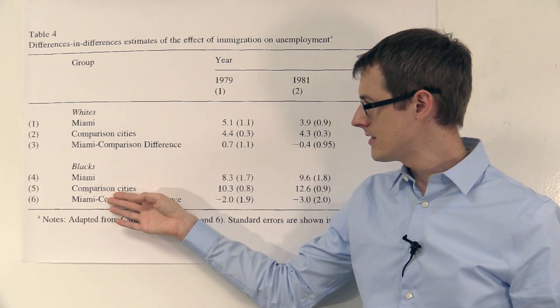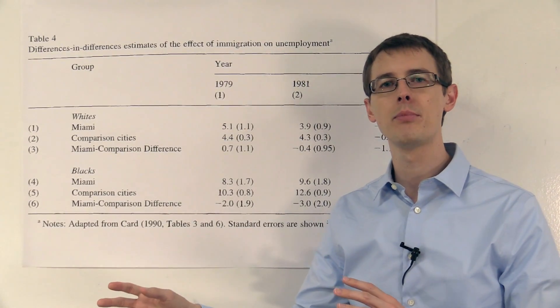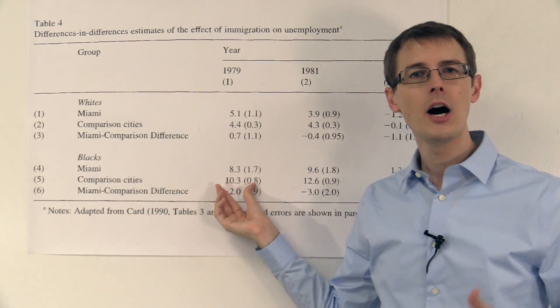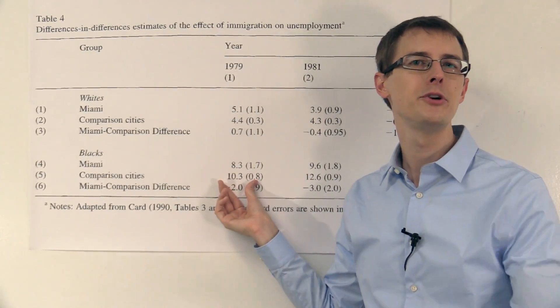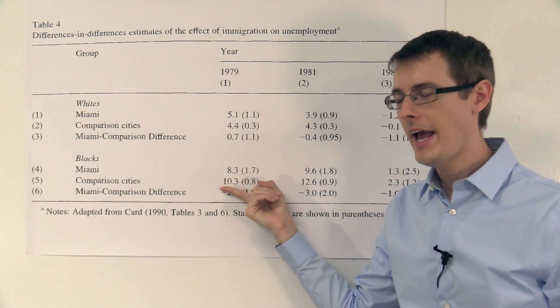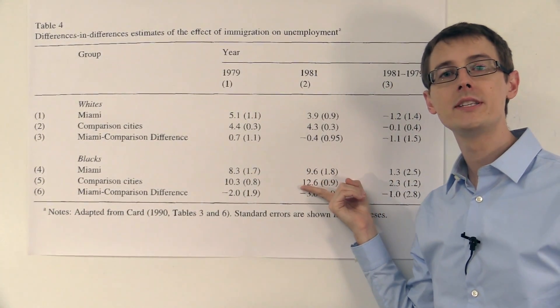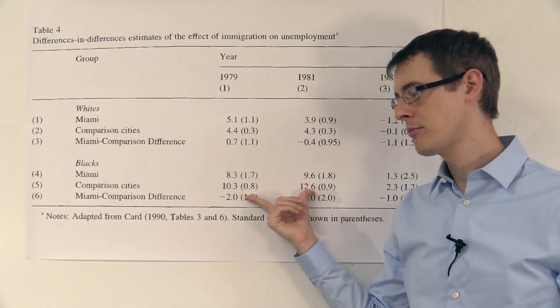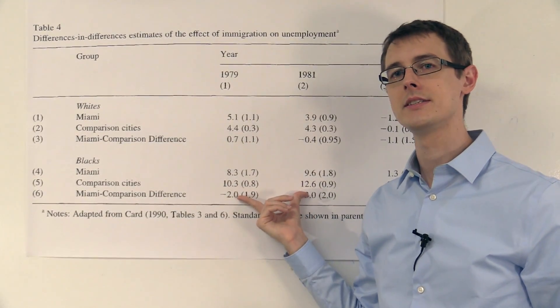In the comparison cities, again, there wasn't any change in immigration between '79 and '81. But the unemployment rate was still changing over time due to other factors. So in '79, it was 10.3%, and it increased to 12.6%. So there was a large increase in the unemployment rate for blacks in these comparison cities.